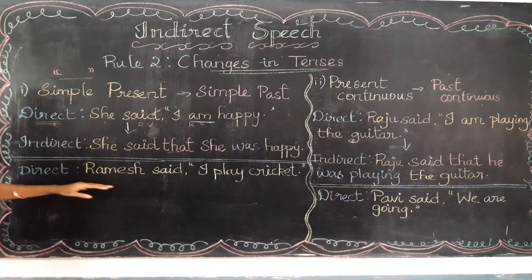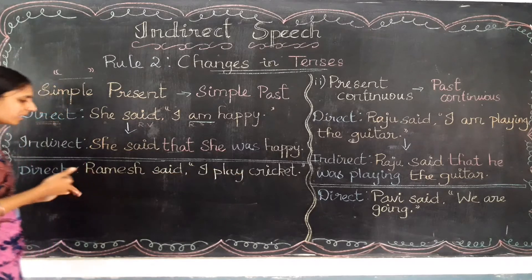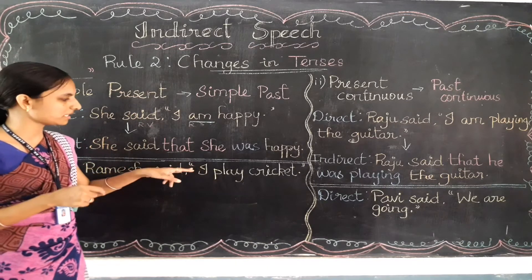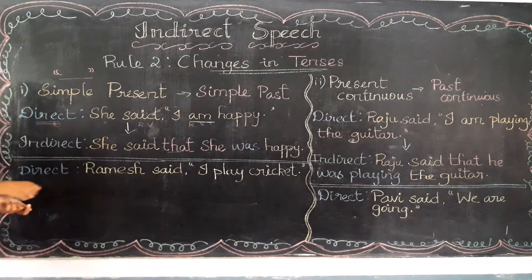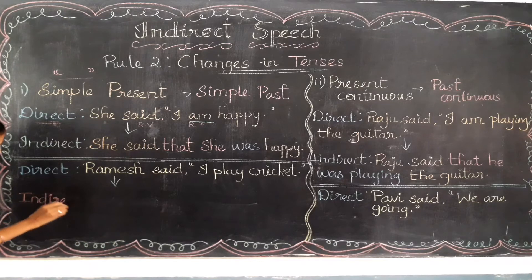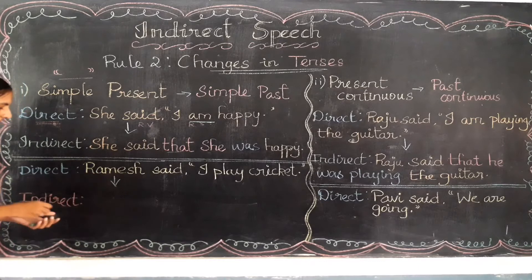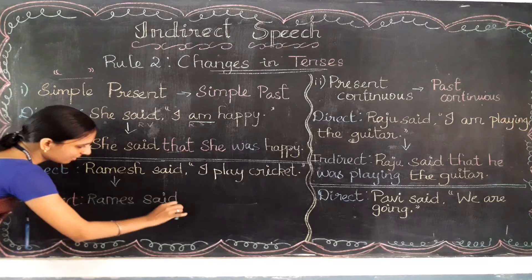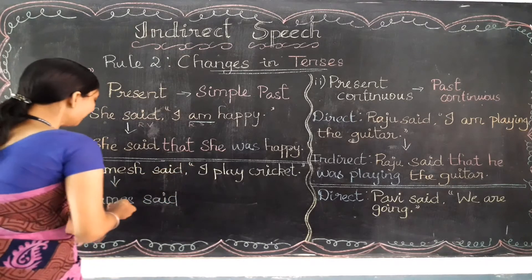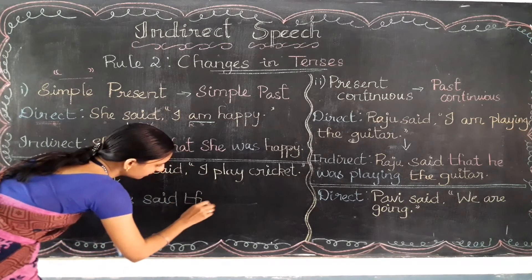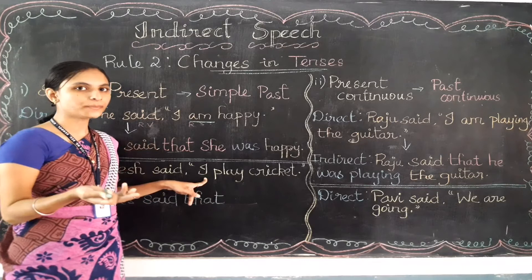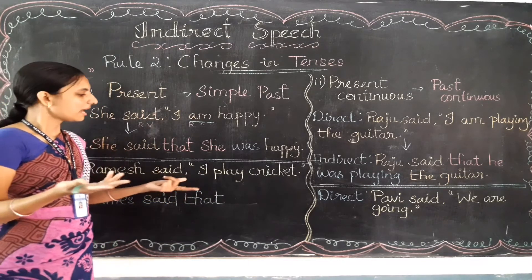Here they have given another direct speech sentence: 'Ramesh said, I play cricket.' This is a direct speech because the speech is enclosed in quotation marks. Let's change this into indirect speech. The speaker name 'Ramesh' comes as it is, followed by 'said.' In place of the comma and quotation mark, we write 'that.' Now, should I write 'I' again? No. I need to change this 'I' into the third person.